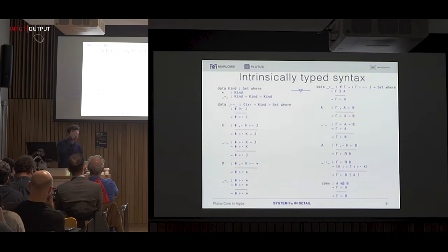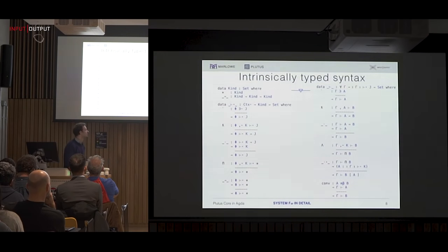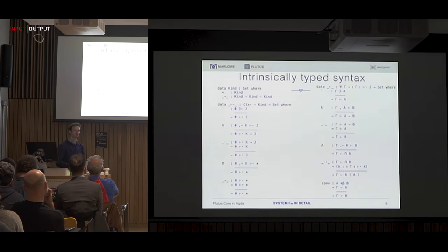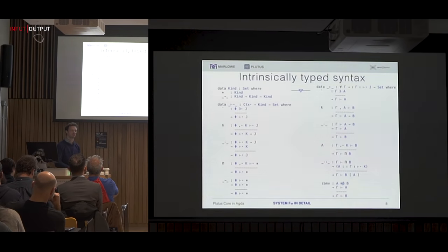Let's look at the syntax in detail. This is both the syntax and the type system — another version of propositions as types. What this means is it's impossible to construct a term which is ill-typed, making it very precise. You can also think of this as a straightforward formalization of the type system, and of course we are interested in properties of the type system.